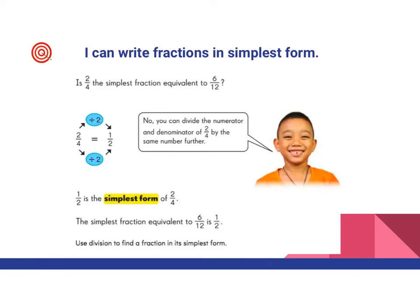We learned and reviewed yesterday that you can find equivalent fractions by either multiplying or dividing both the numerator and denominator by the same number. A fraction can have an infinite number of equivalent fractions because you can multiply by an infinite number of possibilities. But what we're going to look for today is we're going to divide — divide down and divide down, making our fraction smaller and smaller until we get to the lowest possible fraction where we can't divide anymore. We keep going until we've reached the lowest or simplest form.